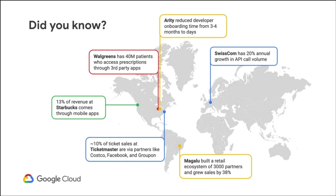Other examples include Swisscom, which has been offering APIs as a service for some of their network infrastructure in Switzerland, and Arity, which is part of the insurance business. It used to take a three to four month process of negotiation, emailing Microsoft Word docs, and all that. Now with APIs, they allow their business partners to get on board with their B2B services within a few days, completely within self-service. And we'll talk more about why that's an important part of everyone's API programs.